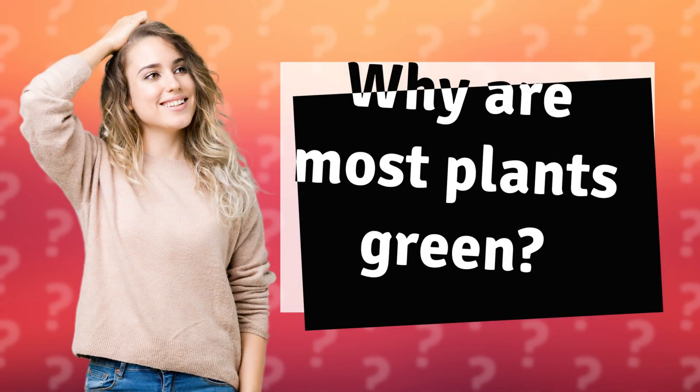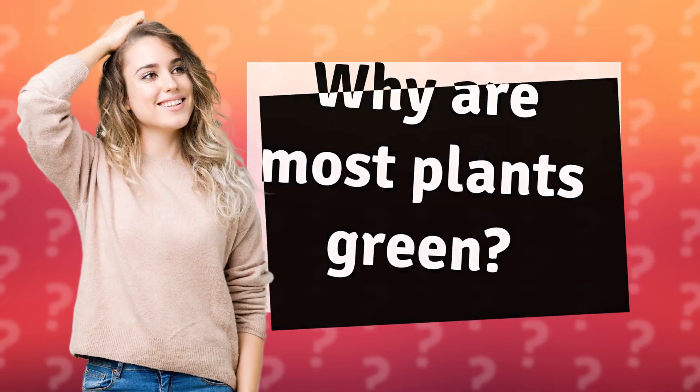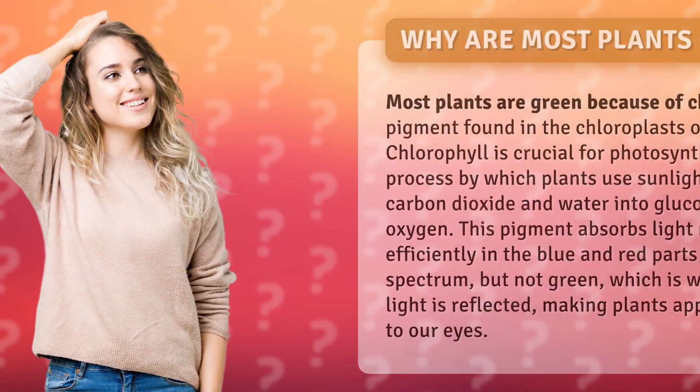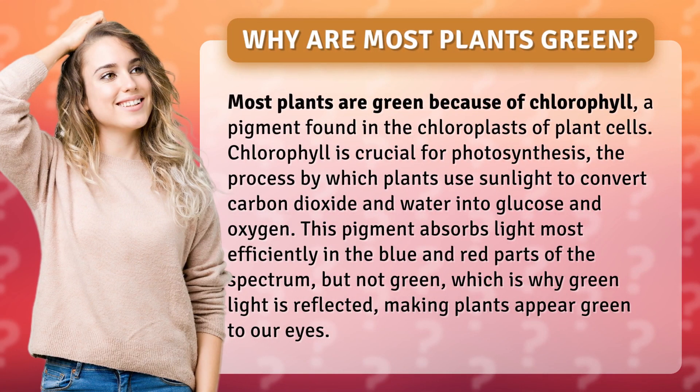Why are most plants green? Most plants are green because of chlorophyll, a pigment found in the chloroplasts of plant cells. Chlorophyll is crucial for photosynthesis, the process by which plants use sunlight to convert carbon dioxide and water into glucose and oxygen.